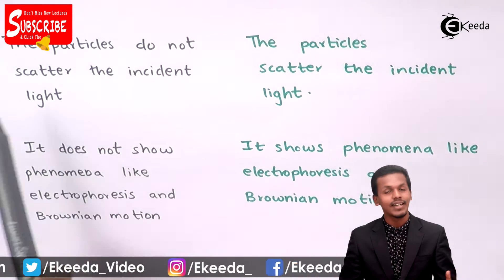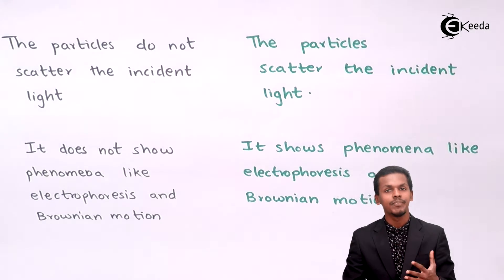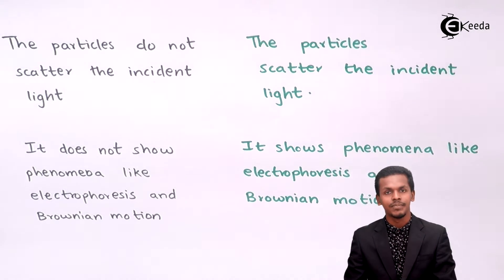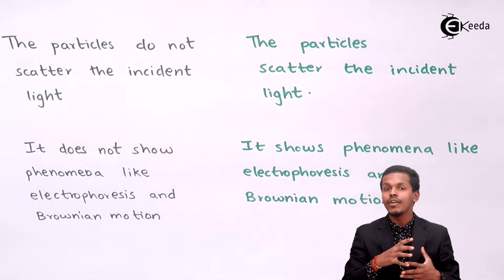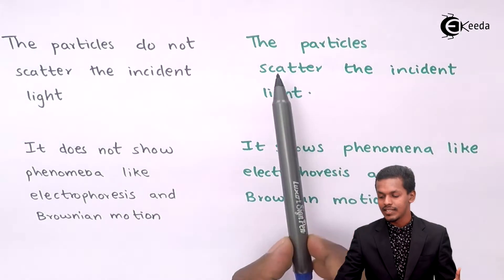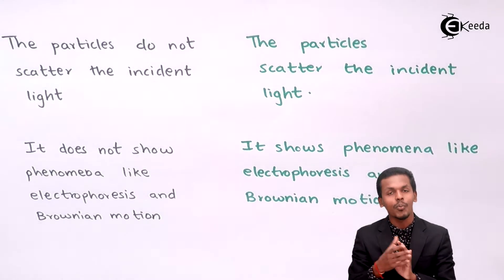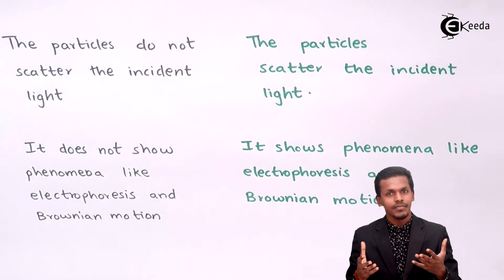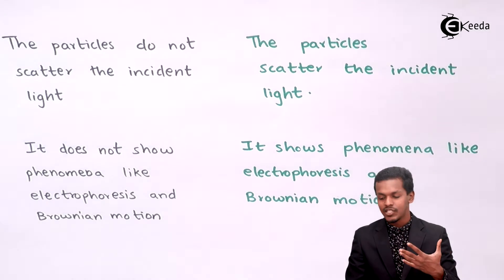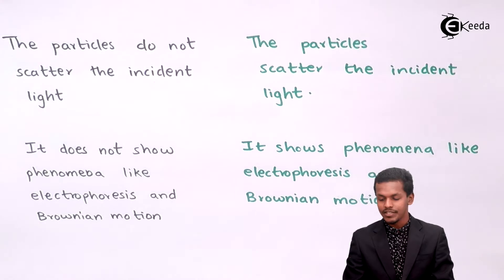The fifth point is that true solution particles do not scatter incident light. This is related to the Tyndall effect, which will be explained in a future lecture. If a true solution is present in a flask and incident light hits it, the light will not be scattered — it passes straight through. But in colloidal dispersion, the particles scatter the incident light because their particle size is greater. This scattering can be observed as the Tyndall effect.